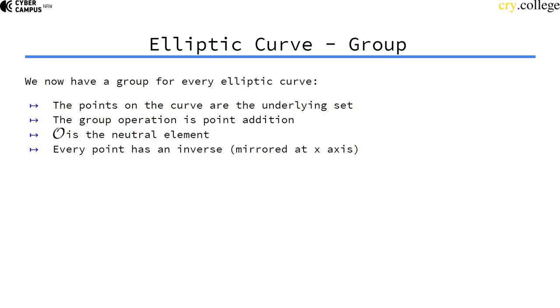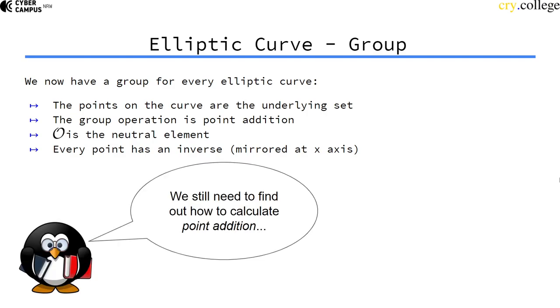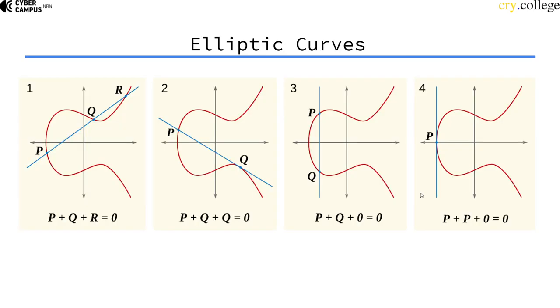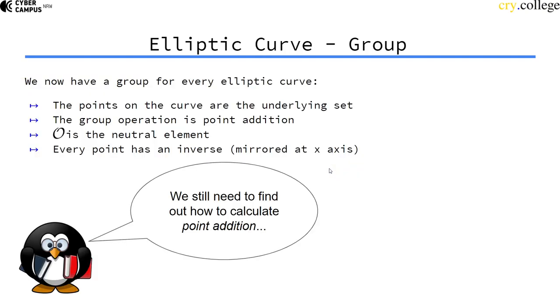And every point has an inverse, because by the curve equation you can tell that all points have a flipped point as well. So we have a group. But actually we still need to talk about what this point addition actually is. Like how do we add those points in a proper formula. And that we'll talk about next.